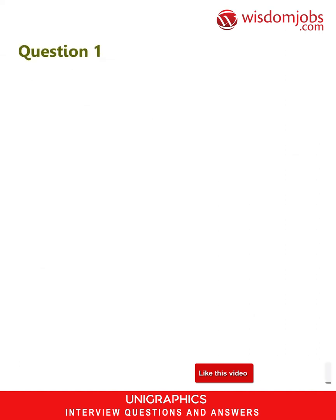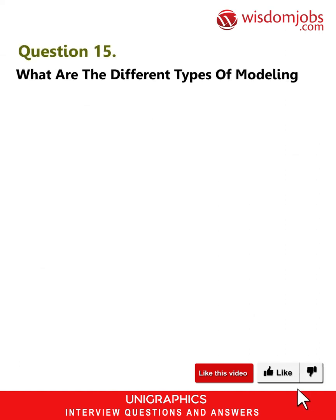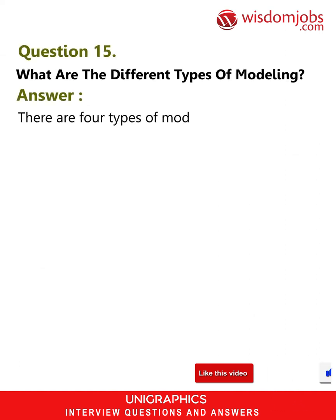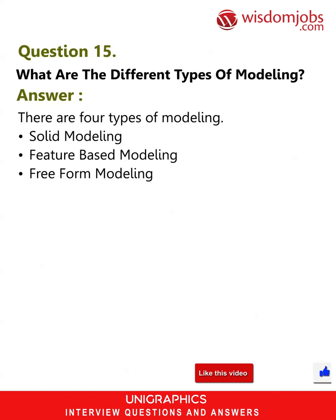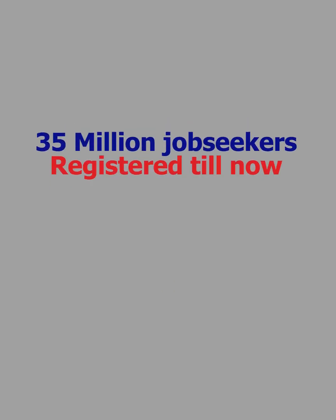Question 15: What are the different types of modeling? Answer: There are four types of modeling: solid modeling, feature-based modeling, free-form modeling, and sheet metal feature modeling.